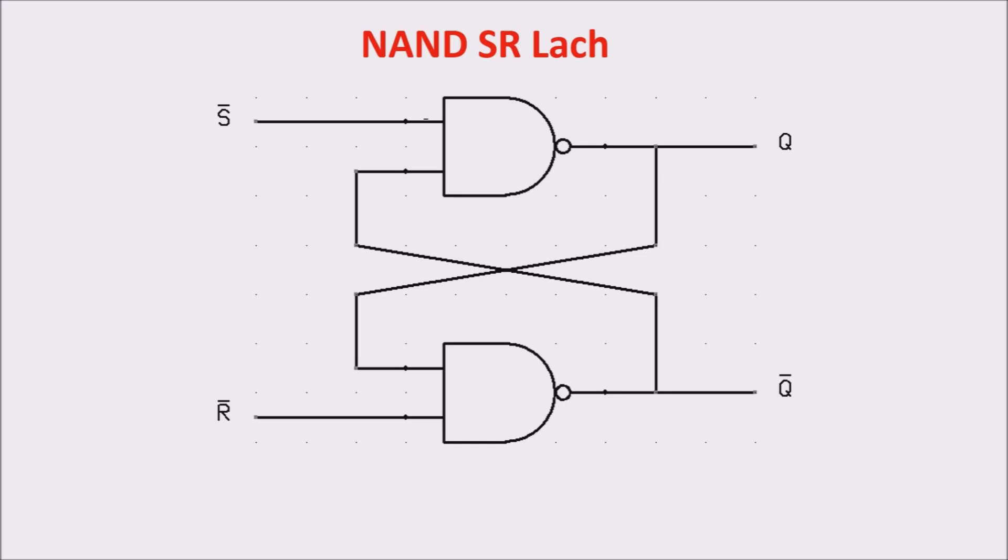Here you are, the SR NAND latch. SR is for set and reset. The latch is composed by two NAND gates, in which the output of one is an input of the other. It has two inputs, set and reset, and two outputs, Q and not Q, which is always the opposite of Q. So it actually has just an independent output.